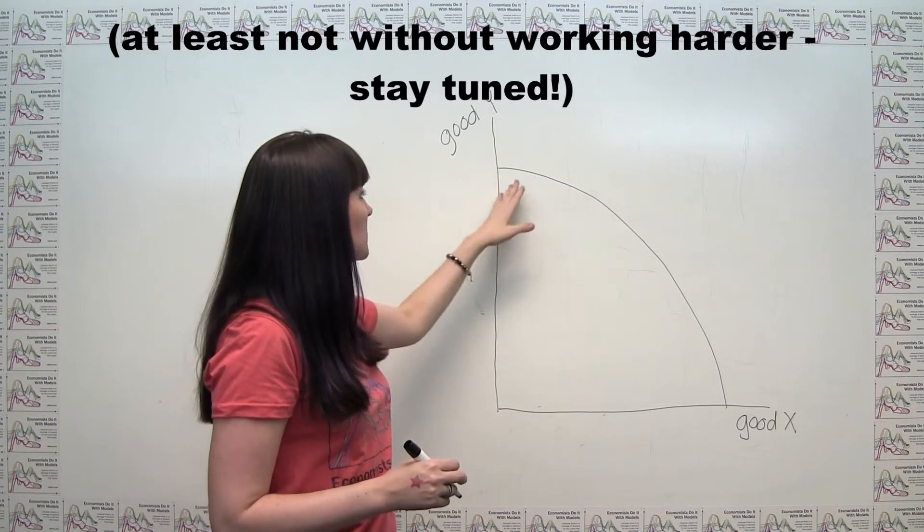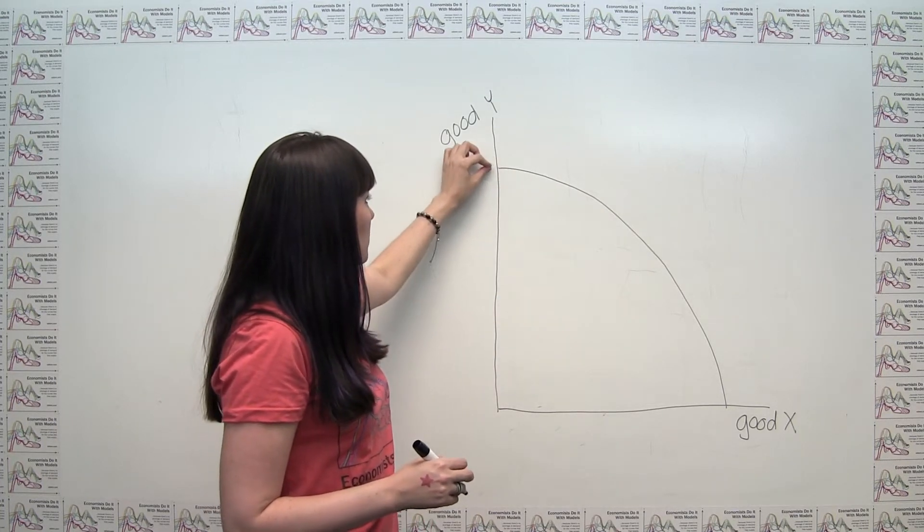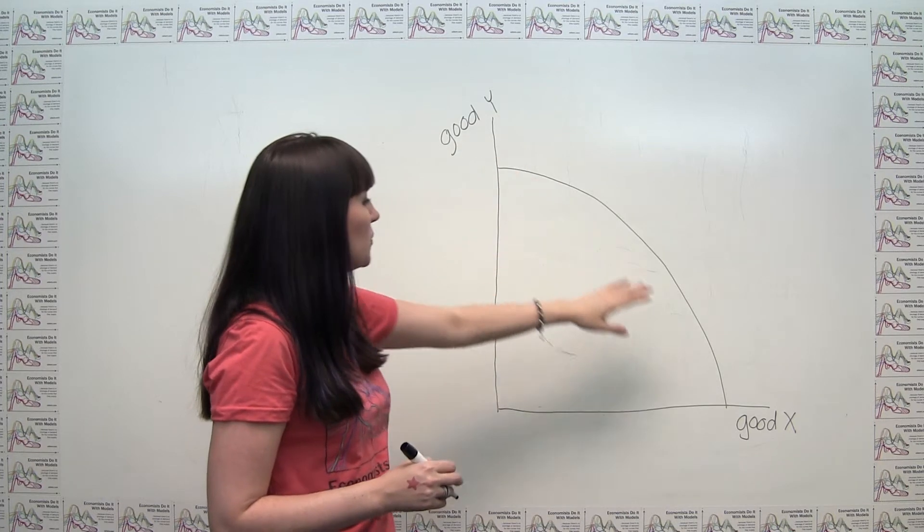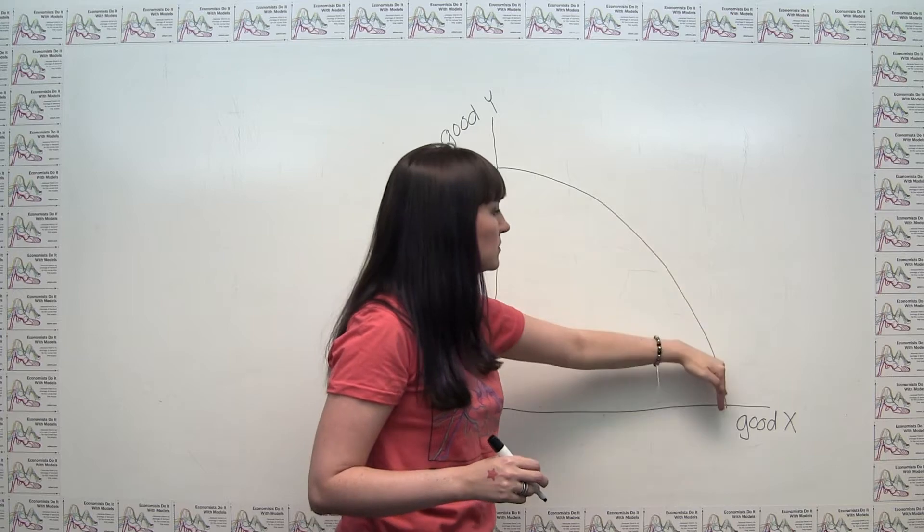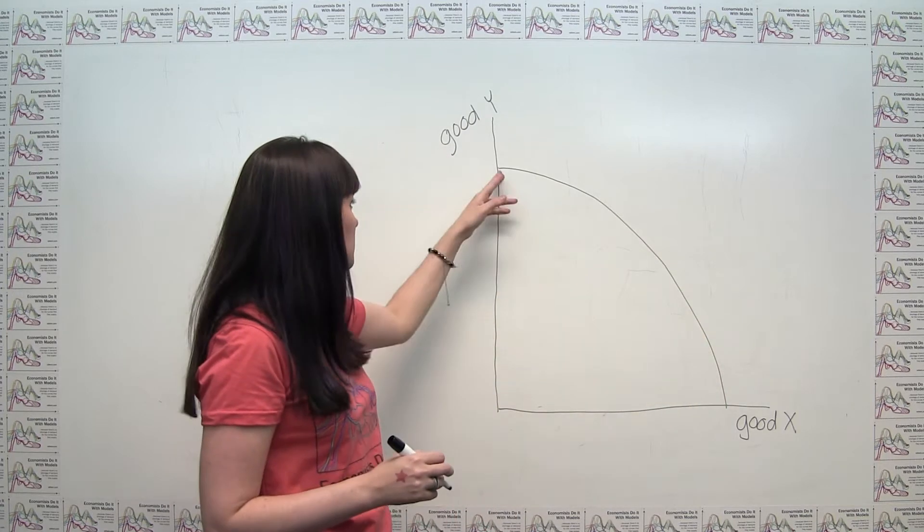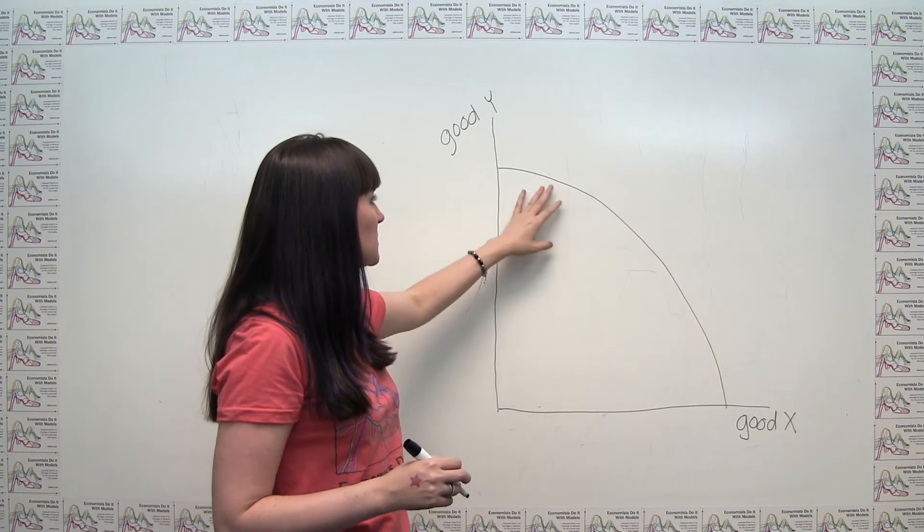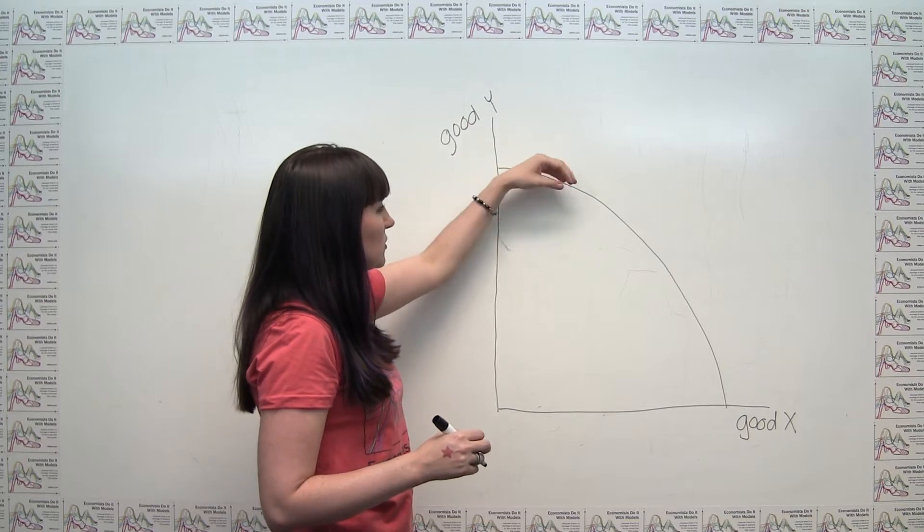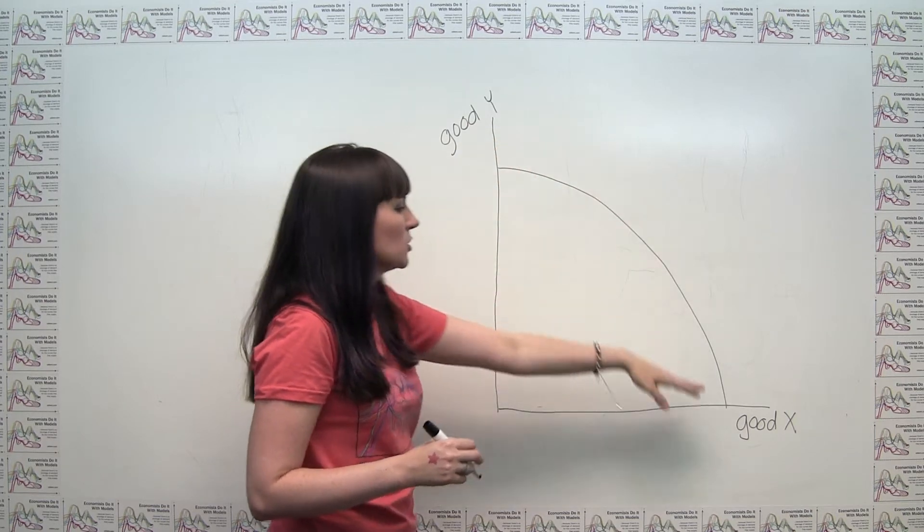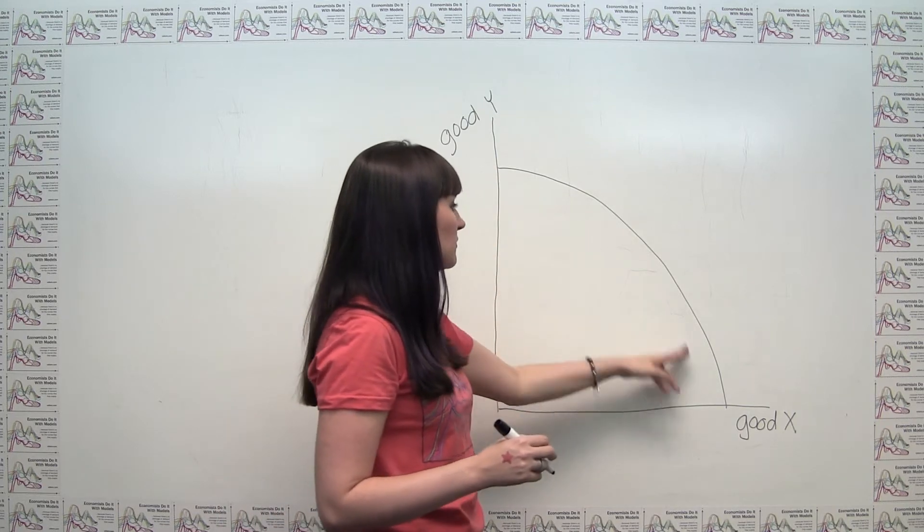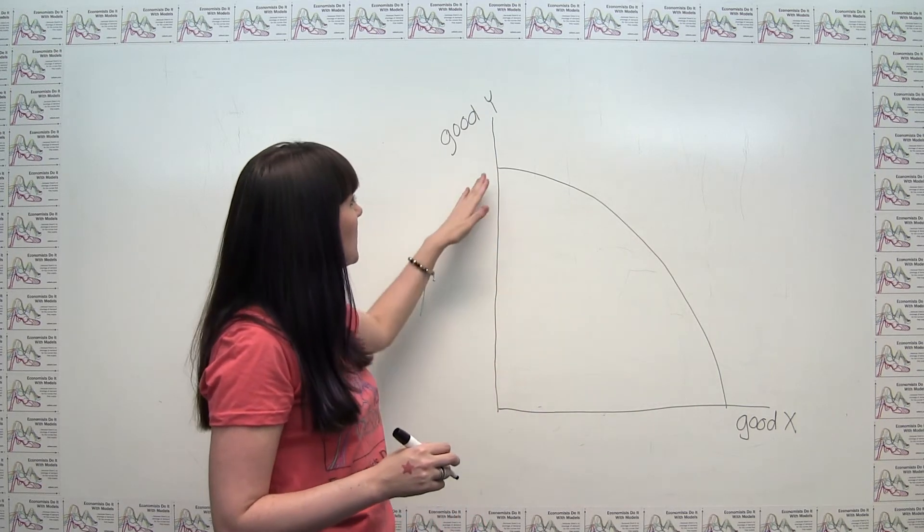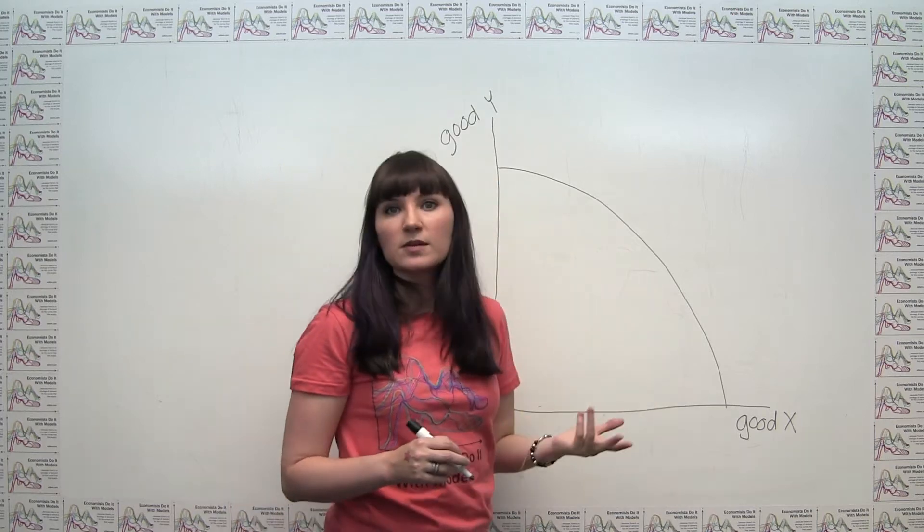And if we're using our resources efficiently, then as we move towards more production of good x, meaning as we go down the production possibilities frontier, we're switching over those resources that are good at making good x and bad at making good y. And that's how we would efficiently shift resources from one place to another. And the result is that you get a curve that looks something like this.